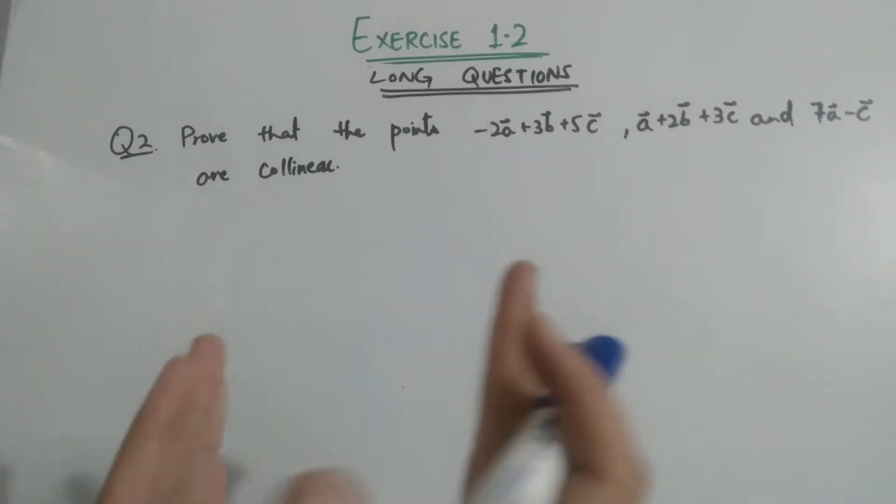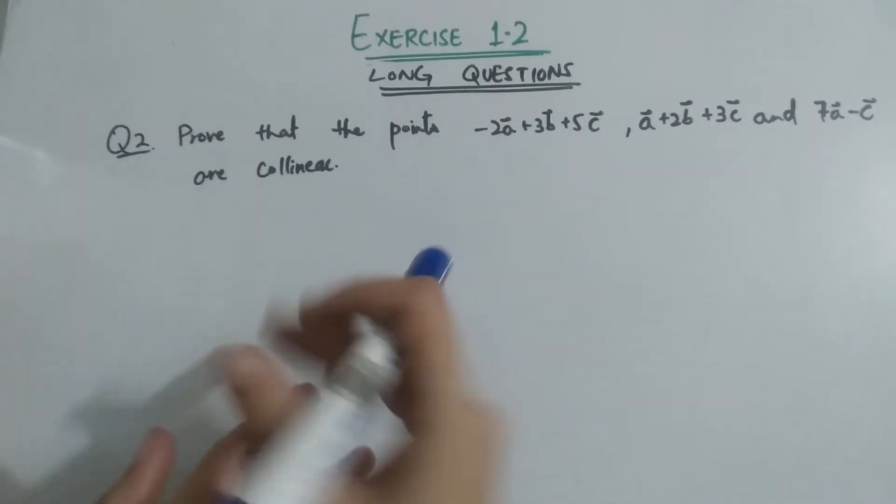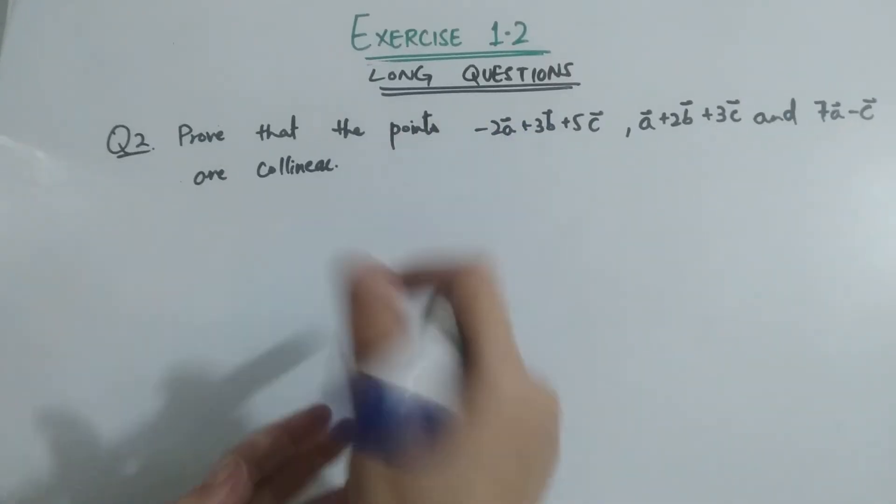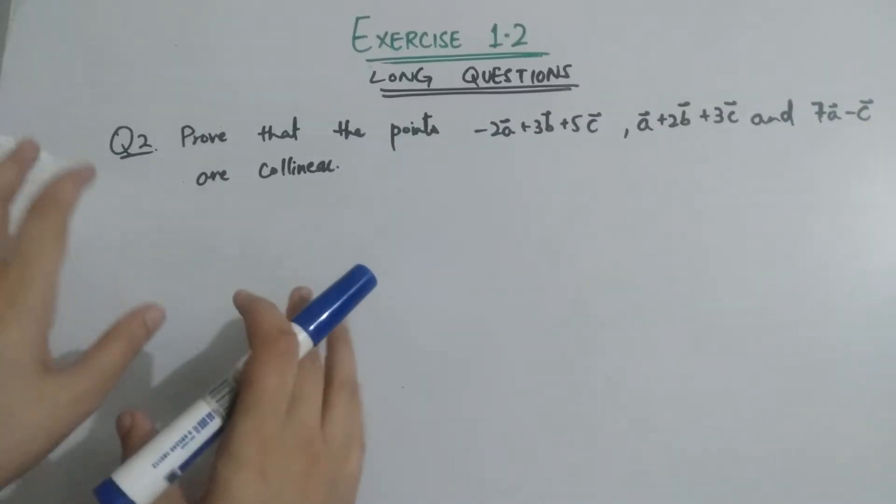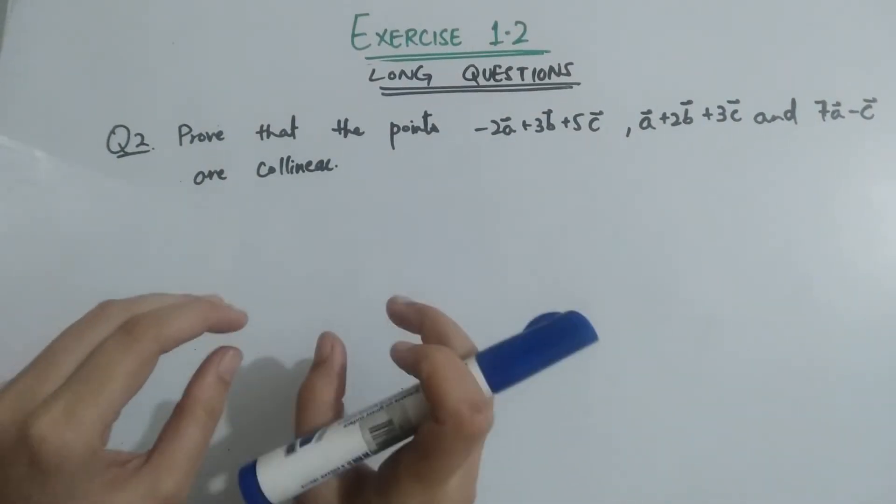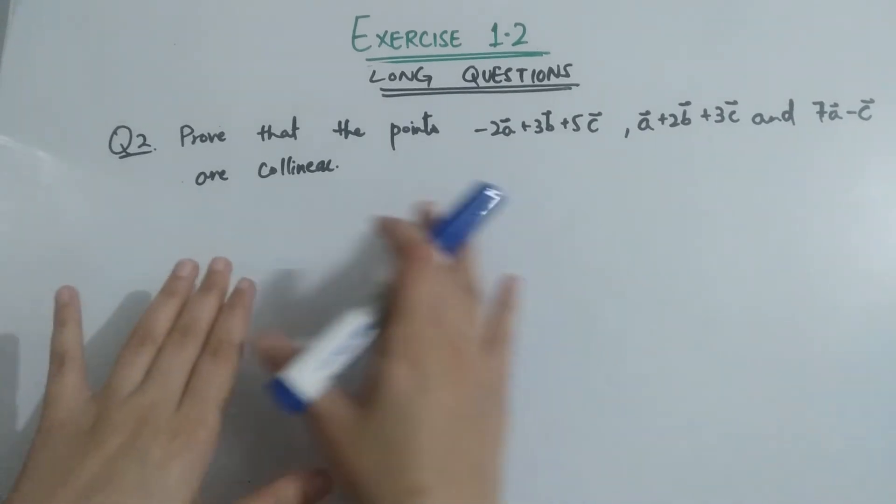In my previous video I solved Exercise 1.2 short questions. Now in this video I am going to solve the long questions of this exercise. Question number two is simple and easy - the concept to prove vectors are collinear.